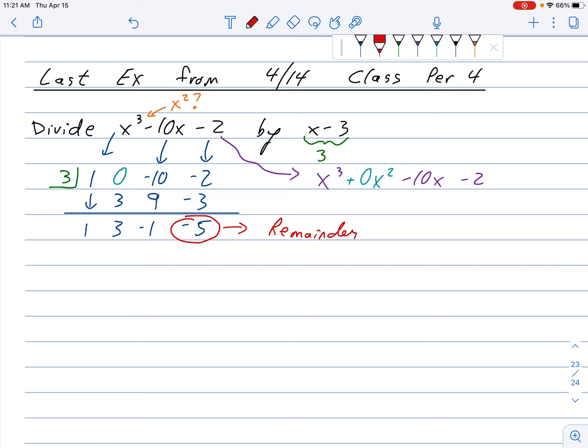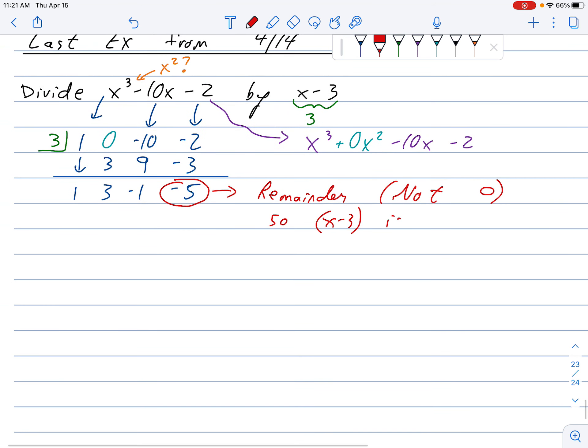I get negative 5, which I usually circle in red because that is my remainder. It's not 0.